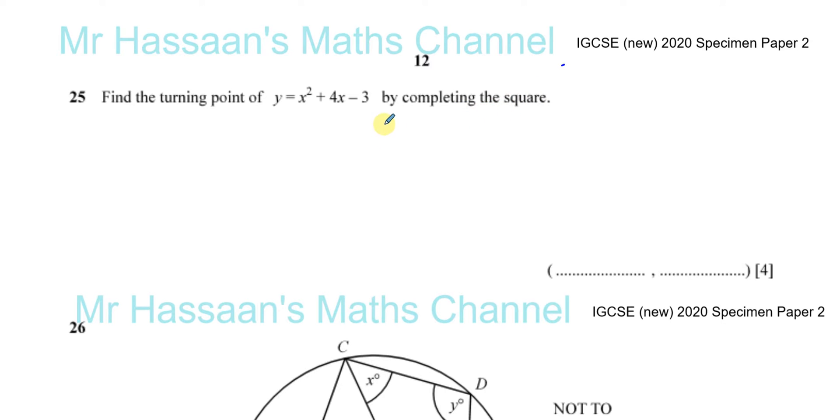You should have learned by now in this new syllabus that you can find the turning point of a function by differentiating and setting the differential to 0. When you differentiate, you find the gradient function. At the turning point, the gradient equals 0. You can equate it to 0, find the x value, then find the y value by substituting the x value back into the original function.